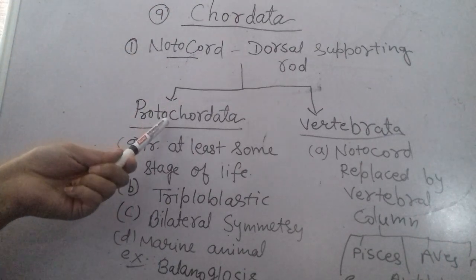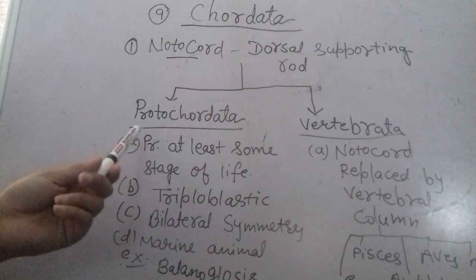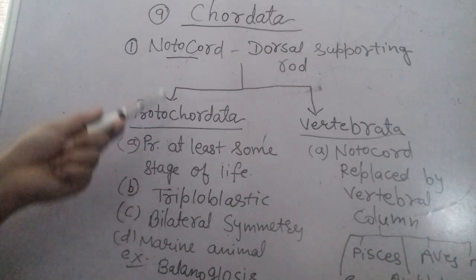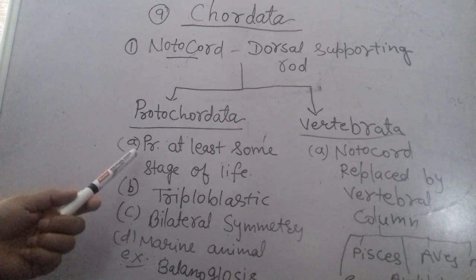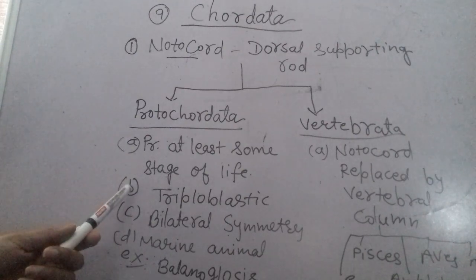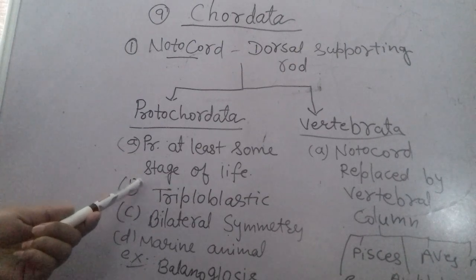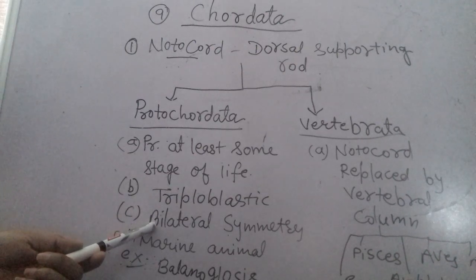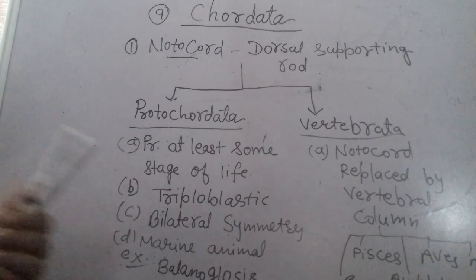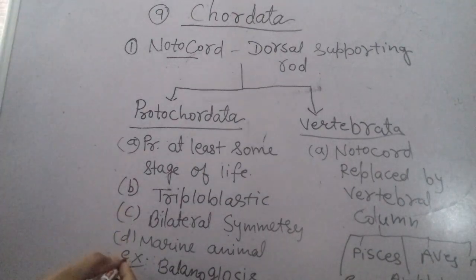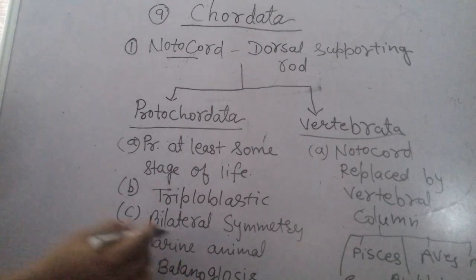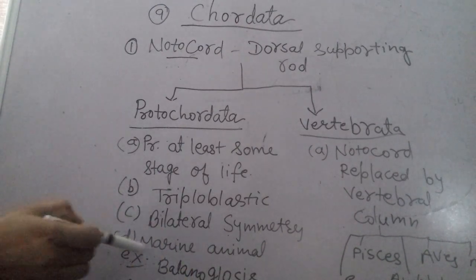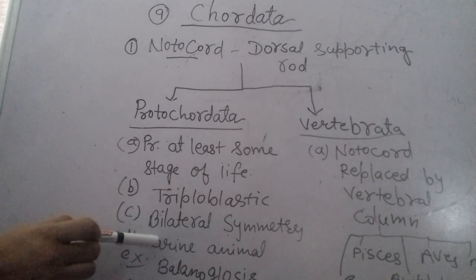In Protochordata, the Notochord is present at any stage of life. These animals are Triploblastic — made of three layers — bilaterally symmetrical, coelomate with a body cavity, and they live in marine habitats, making them aquatic organisms.